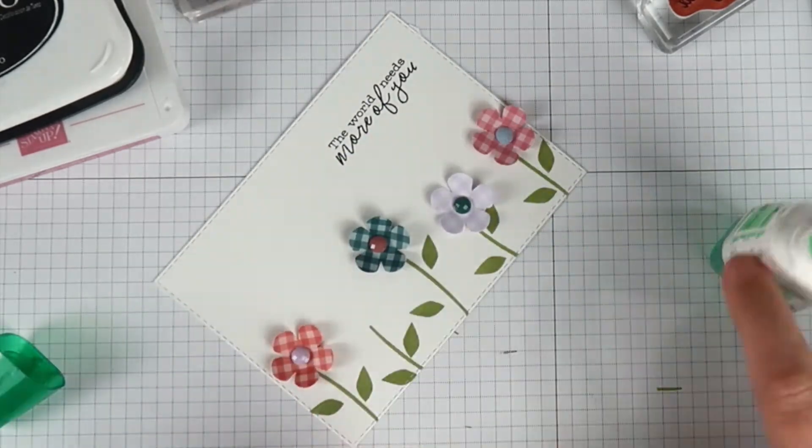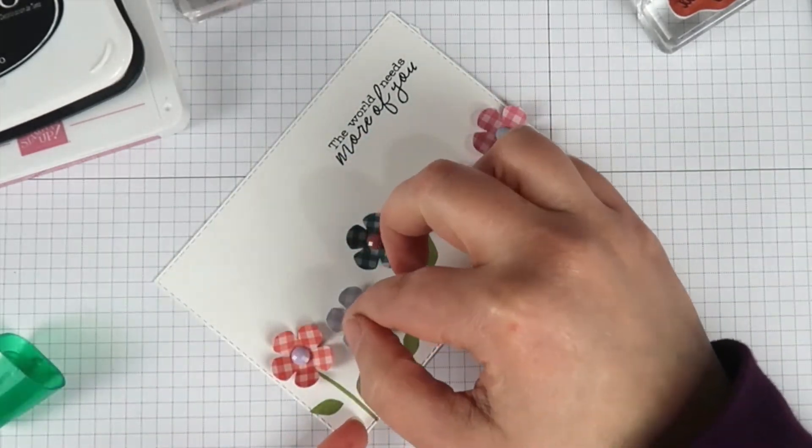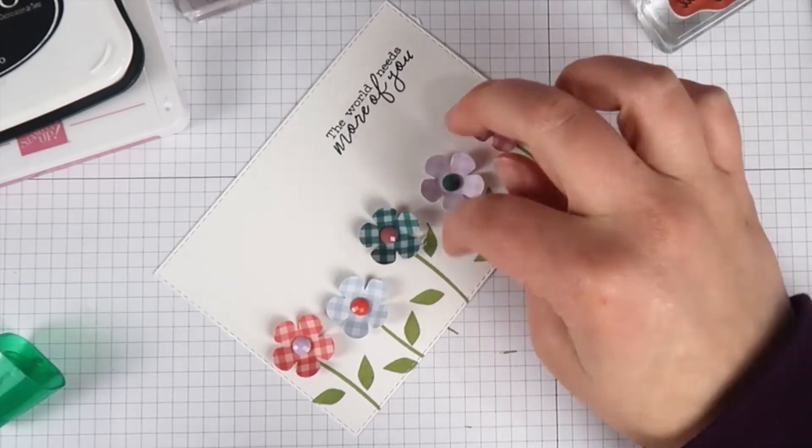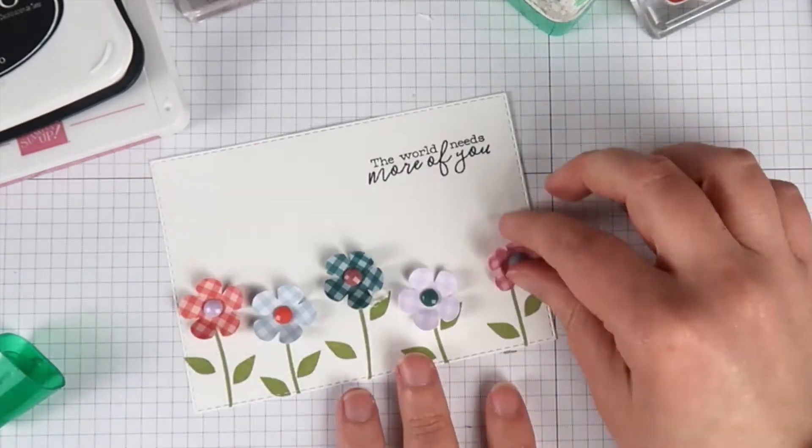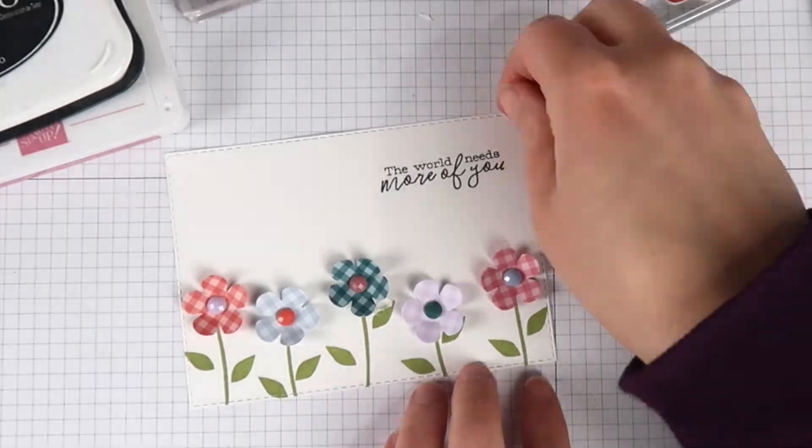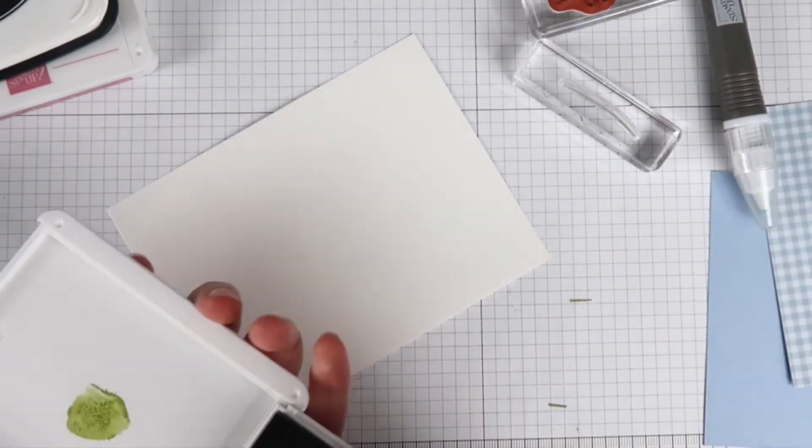Then it's time to glue all my little flowers down. I'm just putting glue on that center part that is flat and that is where it's going to adhere to my card. Now it's time for the inside of my card.